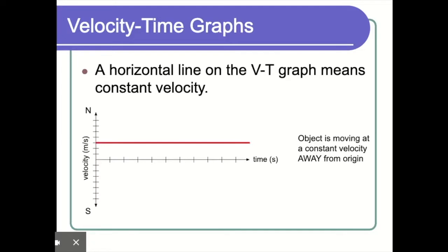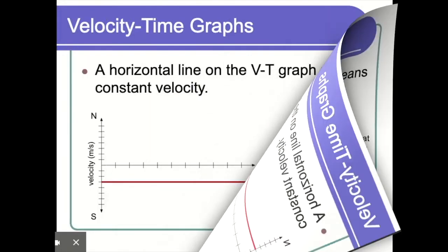Here's our first example. We have a horizontal line on the velocity-time graph, and a horizontal line means a constant velocity. The reason it's a constant velocity is because the slope of this line is zero — it's not experiencing any change in velocity, which means no acceleration. We also have negative and positive values on our y-axis. Here we see a positive velocity of around 3 meters per second, so we're moving away from the origin at a constant velocity.